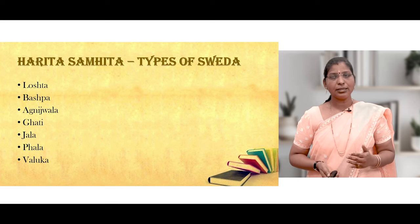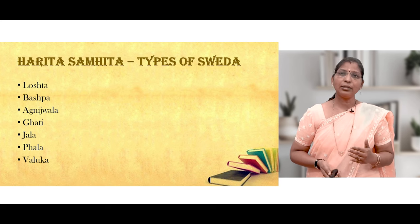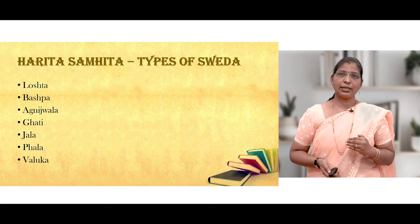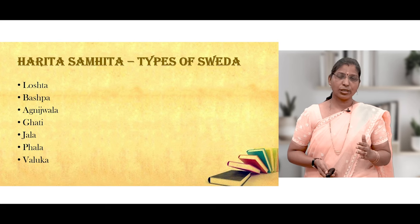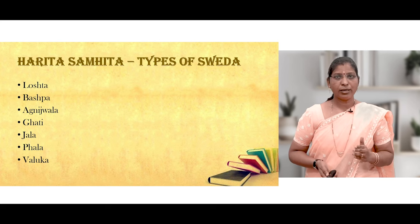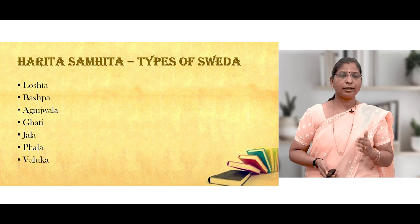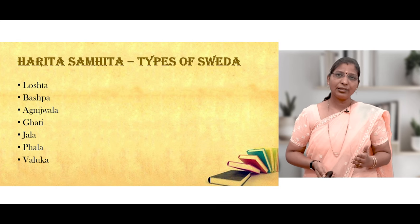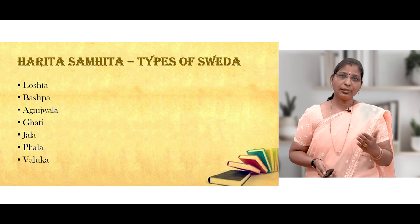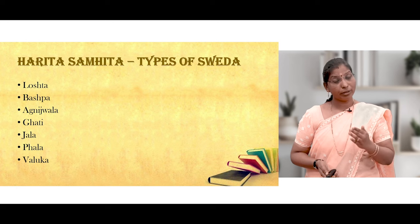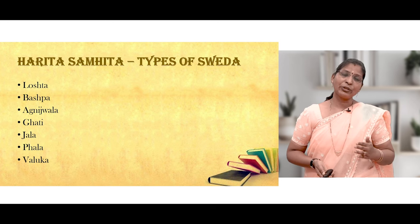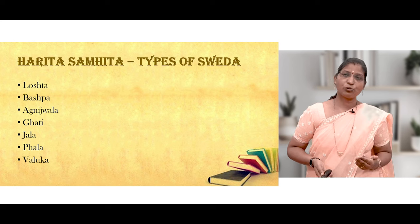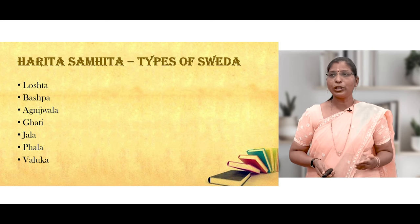In Harita Samhita, Sweda is divided into seven types: Loshta, Bhashpa, Agnijwala, Gati, Jala, Fala, and Valuka. These are very practical things used in daily practice and traditionally in India in routine practice.